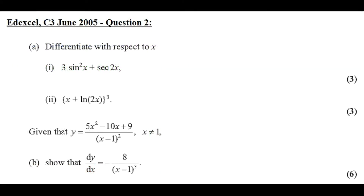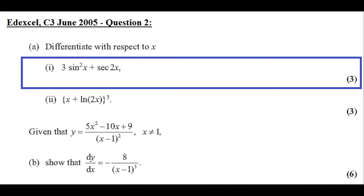Hi there, in this video I'm going to do a past exam question on differentiation. So let's take a look at this question. Question 2a: differentiate with respect to x. And in part 1 of a, we need to differentiate 3 sine squared x plus sec 2x. So let's see how this is done. Let's go to the paper and pen.